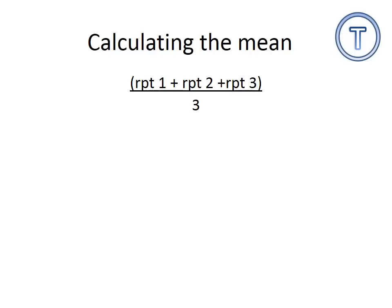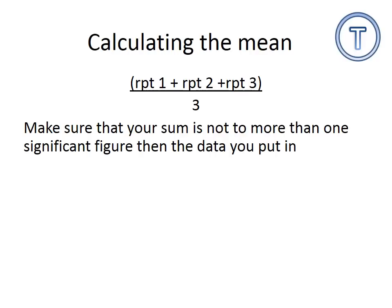Very easy. How to calculate a mean. Three repeats. Repeat one, plus repeat two, plus repeat three. So you want to do three repeats and then divide it by three. Make sure your answer doesn't have more than one significant figure than the data you put in. So in the instance here, the results might have been 5, 4 and 5. I add those together 14. Divide it by 3.